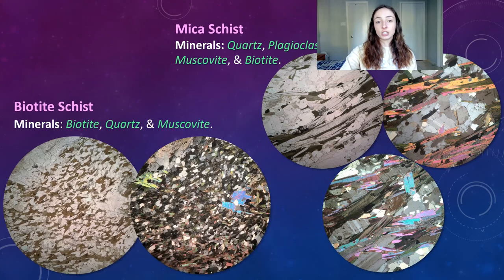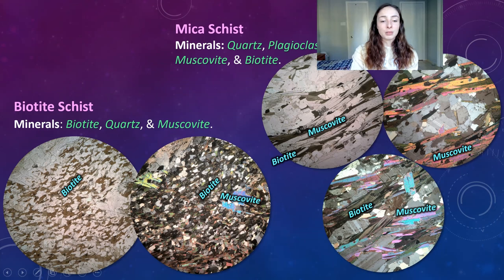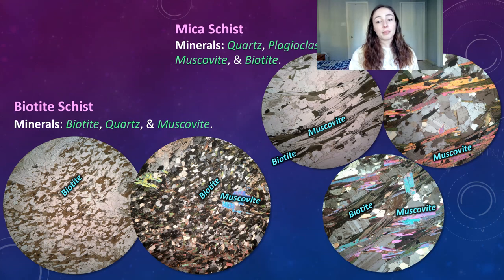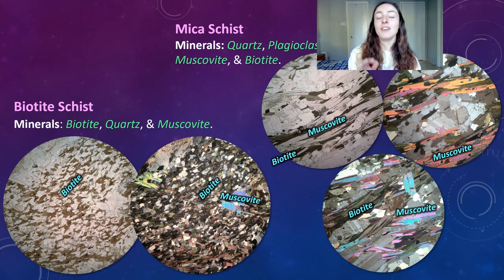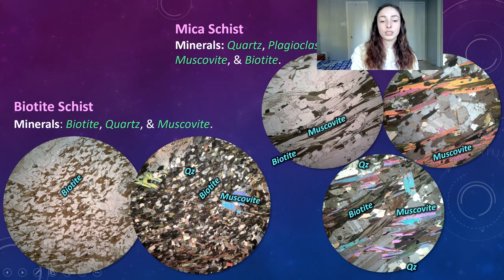Now another example: a mica schist and a biotite schist, to show the difference. I called the upper right sample a mica schist because it contains relatively equal amounts of both biotite and muscovite, whereas the bottom right sample contains a lot more biotite than muscovite, so I called that a biotite schist. You could just call it a schist if you don't want to get too fancy. Both samples contain quartz — you can see a lot of quartz in the matrix of biotite in the left sample. There's also a little bit of plagioclase or feldspar in the right sample, which you can identify by its distinctive twinning lines.